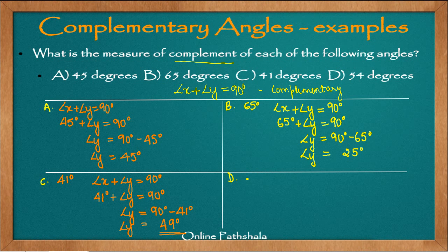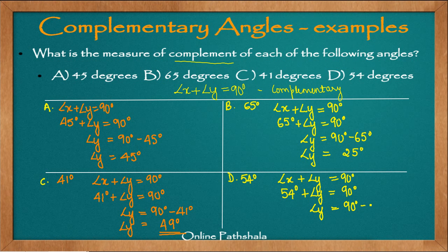In part d, the given angle is 54 degrees. Applying the criterion: 54 degrees plus angle y equals 90 degrees. Transposing 54 degrees to the other side gives angle y equals 90 minus 54. Solving: 10 minus 4 is 6, and 8 minus 5 is 3, so angle y equals 36 degrees. Therefore 36 degrees is the complement of 54 degrees.